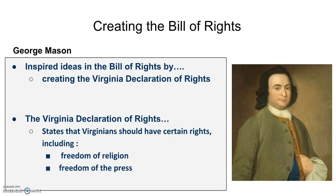George Mason's contribution is that he created a document called the Virginia Declaration of Rights. This document predates the Bill of Rights by a few years and applied only to Virginia, but it stated some really important things — that Virginians should have certain rights, including freedom of religion and freedom of the press. By studying the Bill of Rights, you can clearly see how George Mason's ideas were included in James Madison's document.